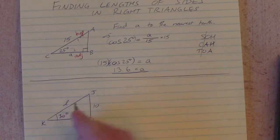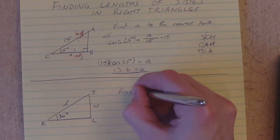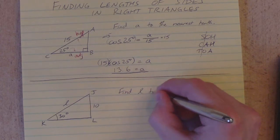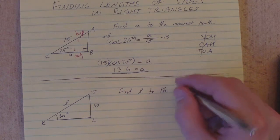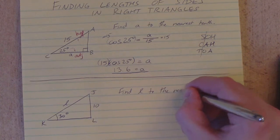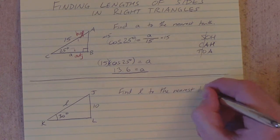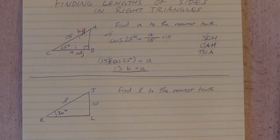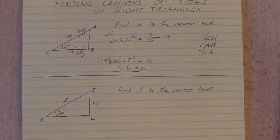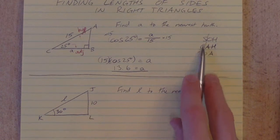And let's say we know this angle down here is 30 degrees. All right. So now we're going to try and find L, little L, to the nearest tenth again and see what happens. Okay.